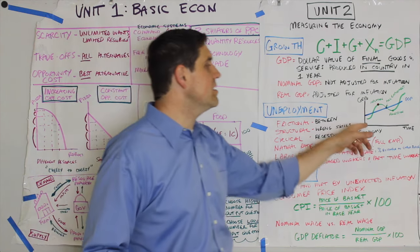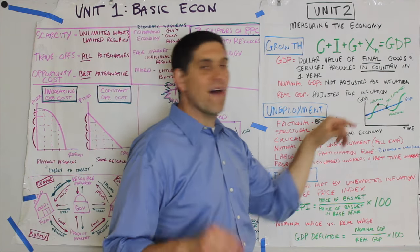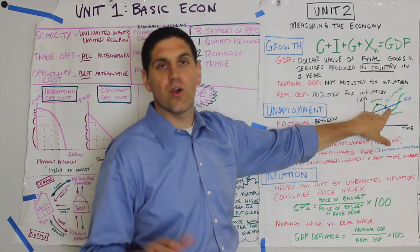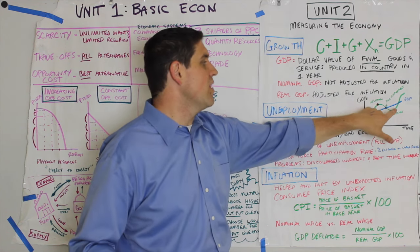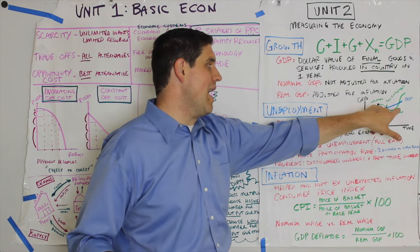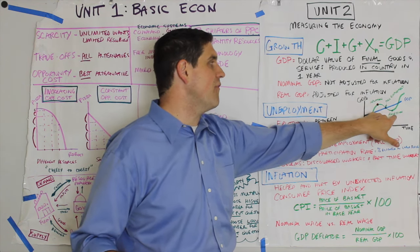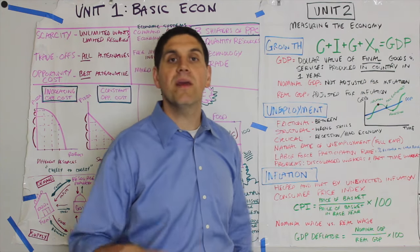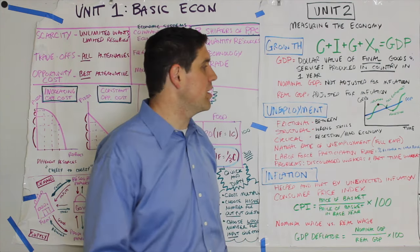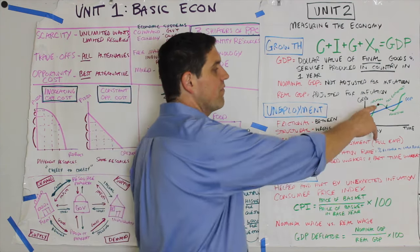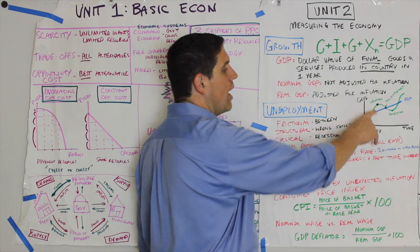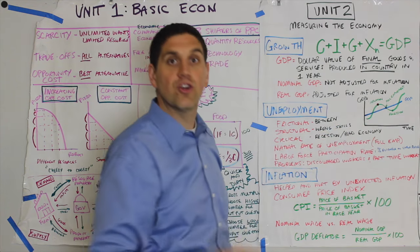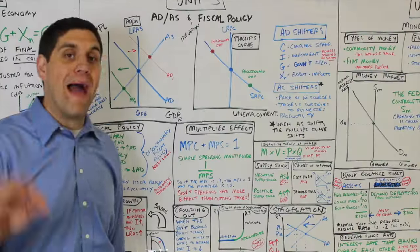Also remember the business cycle — it has four different phases: a peak, a contraction or a recession, a trough, and then an expansion. The economy can only be in one of three places at any given period of time: inflation, recession, or at full employment. You'll show these graphs in the next unit.